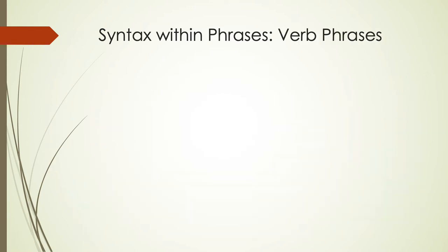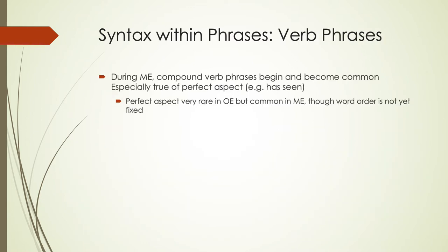With verb phrases during Middle English, we start seeing more compound verb phrases become common, especially with things like the perfect aspect — 'have seen,' 'has seen.' This is very rare in Old English but becoming much more common in Middle English, even though we don't yet have a fixed word order for it. We're also starting to see 'be' and 'have' starting to be used as auxiliary verbs, so 'I am going,' 'I have gone' are examples of using those as auxiliaries.